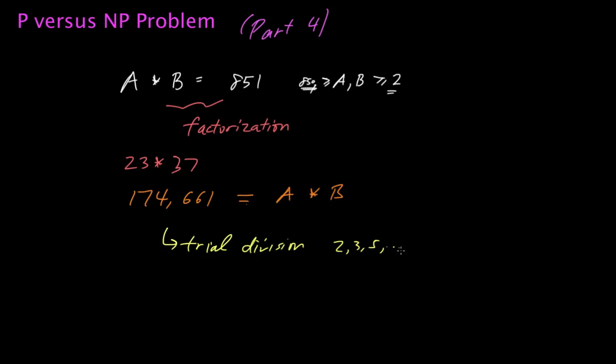The process of doing trial division, if you have a number that's n digits long, would require approximately on the order of 10 to the n over 2 steps to decompose using trial division.